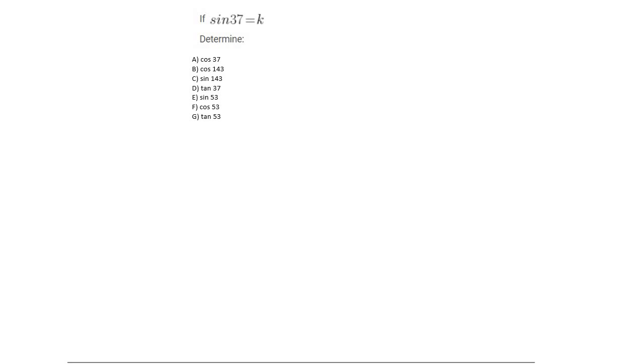In a question like this you have to draw a triangle. Now they tell you that the angle is 37, so that's instantly quadrant 1. They say that sin equals k, so what you do is say k over 1. You fill in 37.